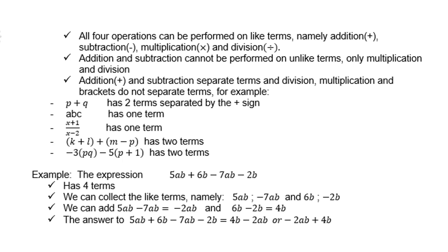The expression 5ab plus 6b minus 7ab minus 2b has four terms. We can collect the like terms, namely 5ab, negative 7ab, and then 6b and minus 2b are like. We can add 5ab minus 7ab to give us minus 2ab, and 6b minus 2b is 4b.